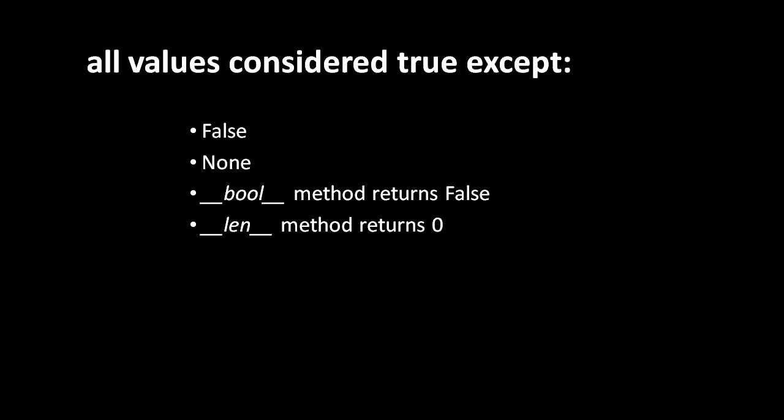If an object has a special method __bool__, or a special method __len__ — short for length — then one of those two methods is used to determine the truth value of that object. The __bool__ method should return either true or false, and that returned value represents the truth value of the object.